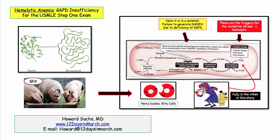That wraps up our discussion of G6PD insufficiency for the USMLE Step 1 exam. If you remember that G6PD deficiency is associated with denatured hemoglobin and that splenic macrophages love to gobble up the Heinz bodies, you'll have no problem nailing the key derivatives on test day. If you have any questions or concerns, please email at 12days. Thank you.